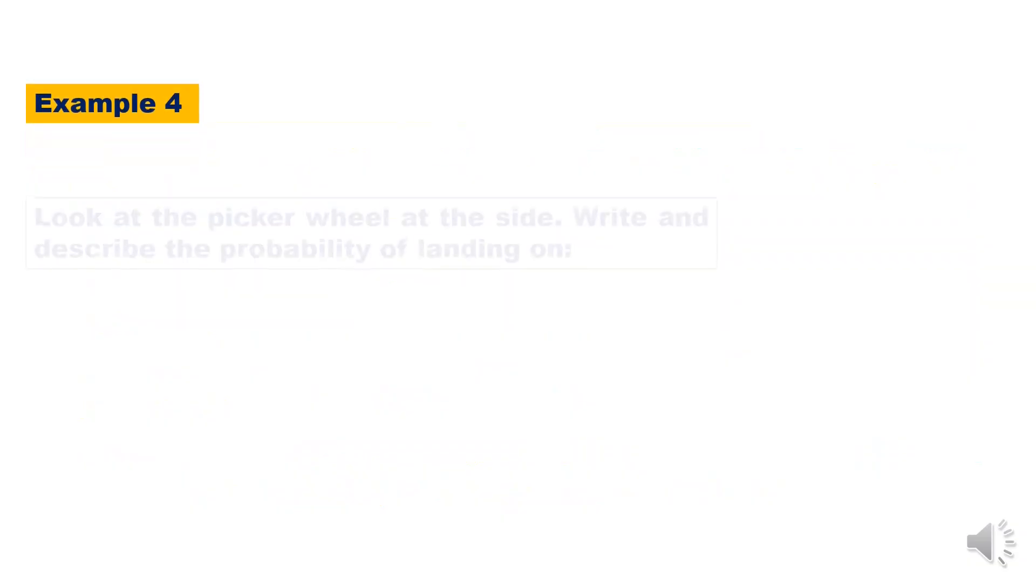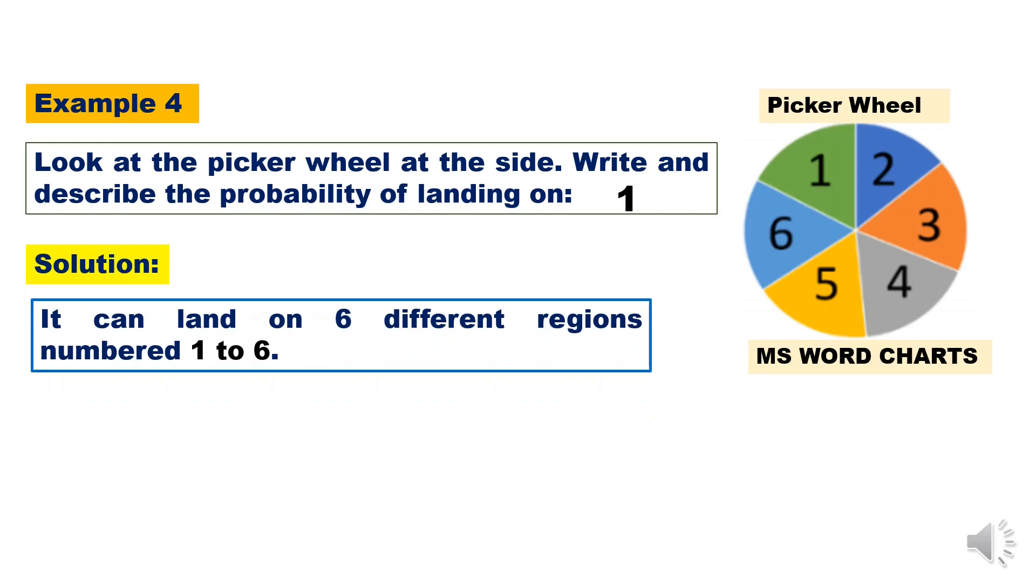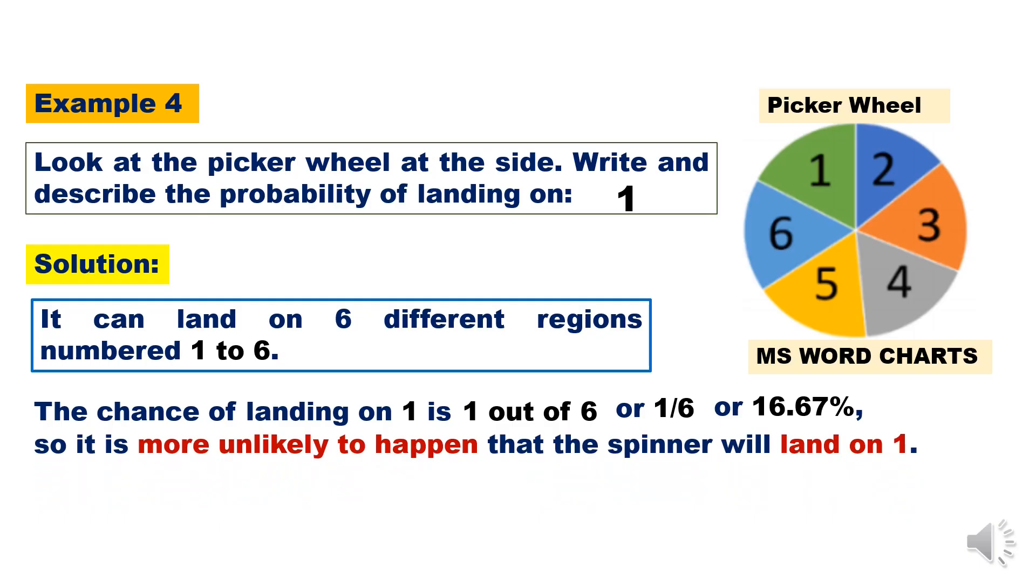Example 4. Look at the spinner wheel at the side. Write and describe the probability of landing on 1. Solution: It can land on 6 different regions numbered 1 to 6. The chance of landing on 1 is 1 out of 6, or 1 over 6, or 16.67%. So it is more unlikely to happen that the spinner will land on 1.